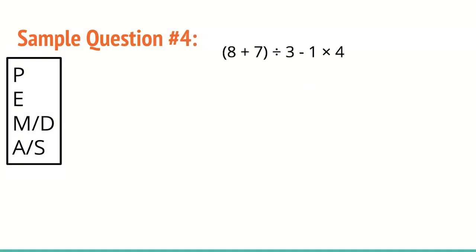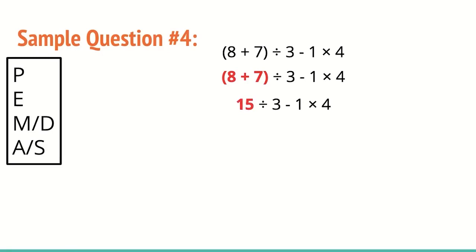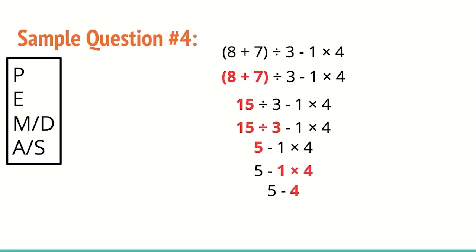Sample question four adds parentheses: (8 plus 7) divided by 3 minus 1 times 4. We start with the parentheses first — 8 plus 7 is 15, and we drop the parentheses. Now we have 15 divided by 3 minus 1 times 4. No parentheses or exponents, so we focus on multiplication or division. 15 divided by 3 is 5. Then 1 times 4 is 4. Finally, 5 minus 4 gives us 1.